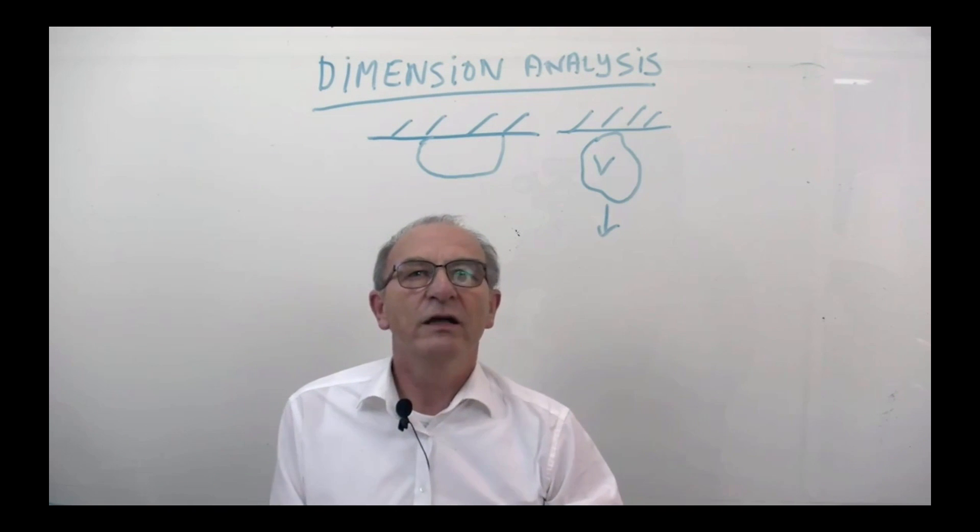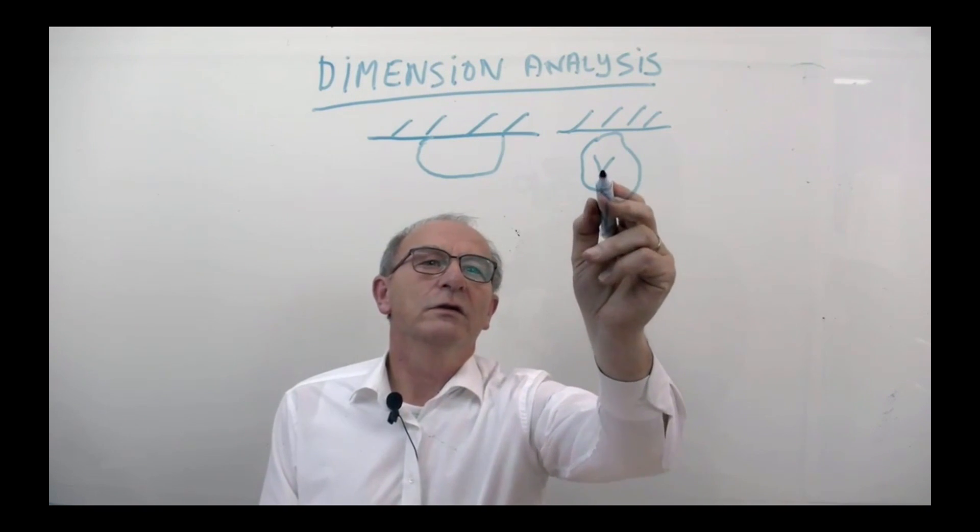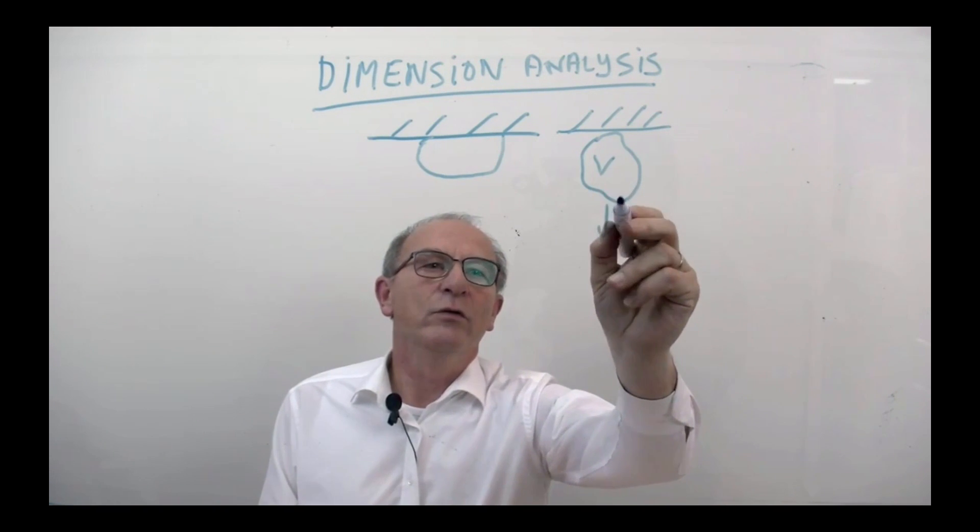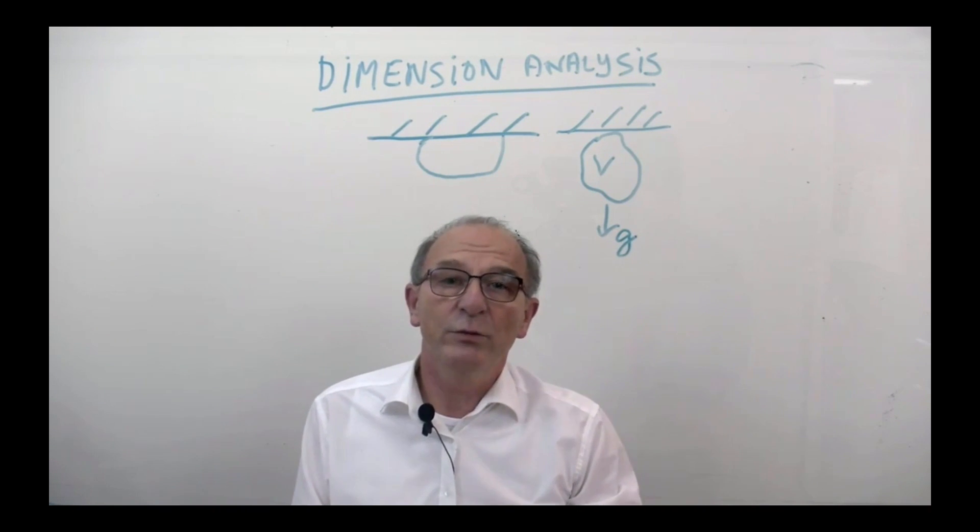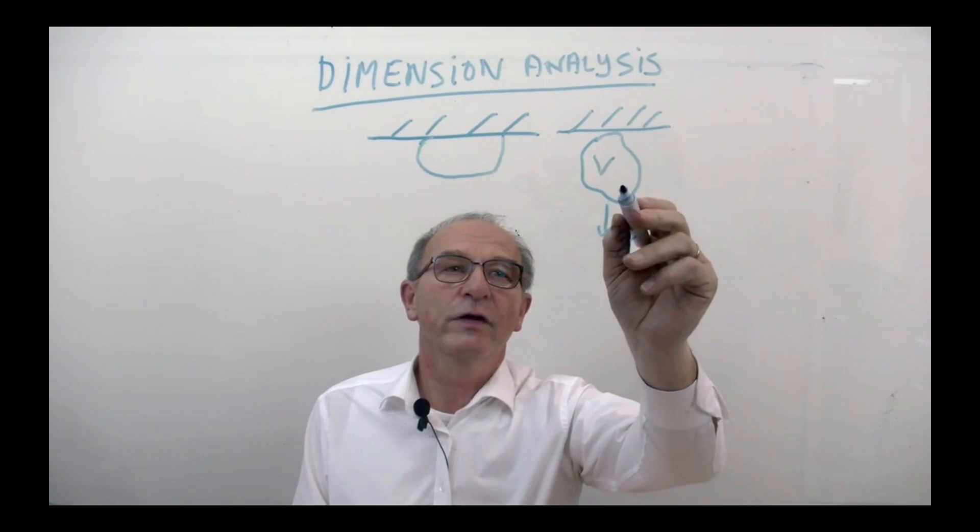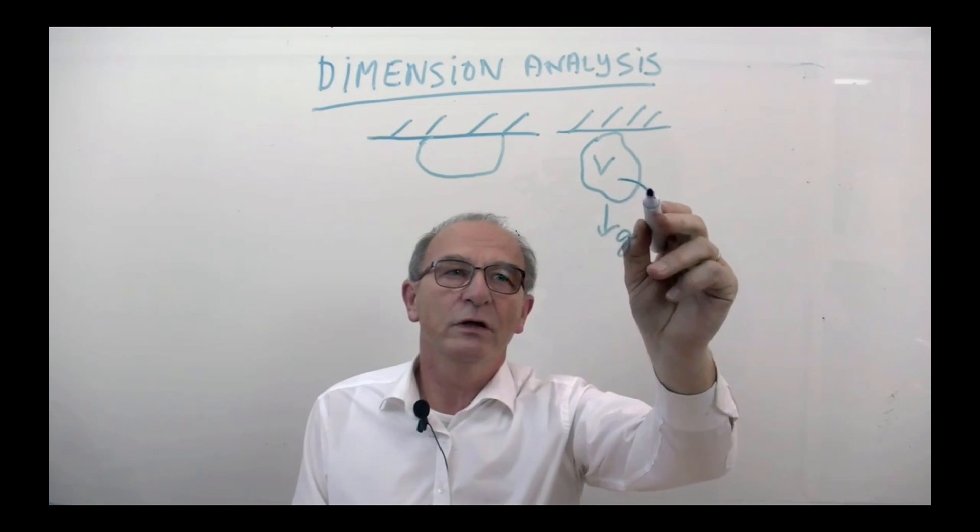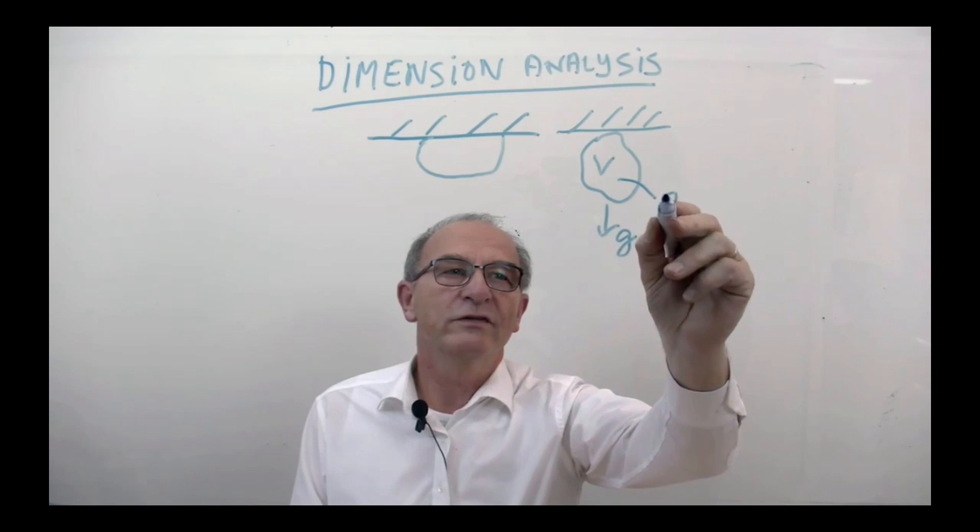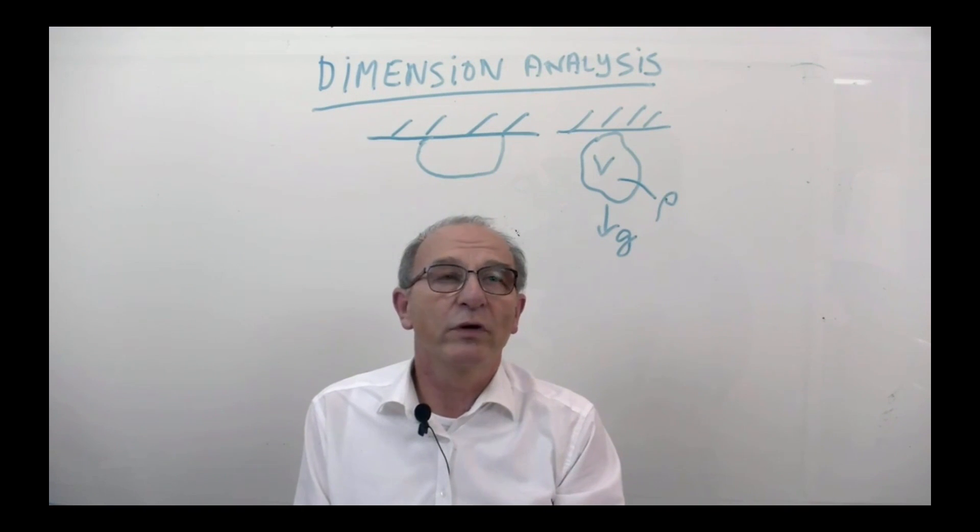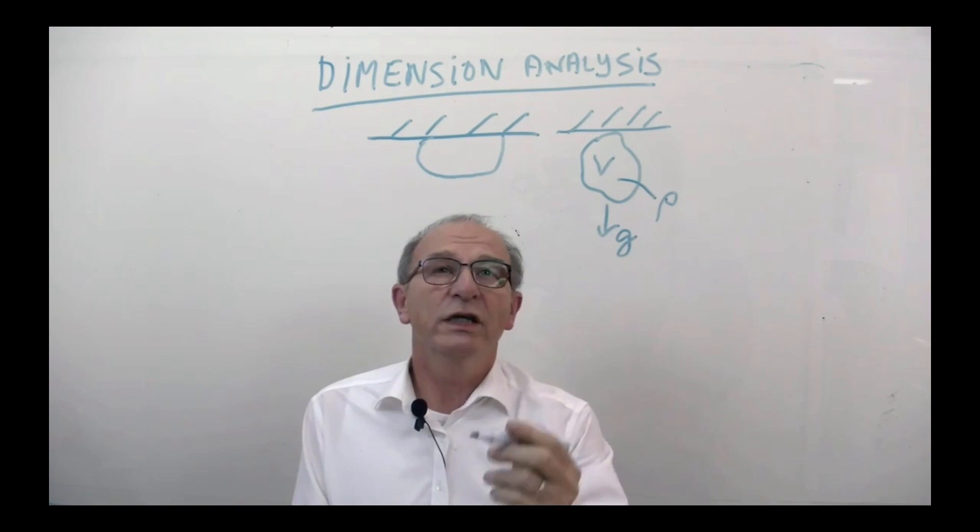In dimension analysis you can say where is this critical volume dependent on? Well, first of all, the gravity constant will be a variable which will be in this case relevant. Another one is a property of this droplet. Well, let's say it is water, the density which is really important.